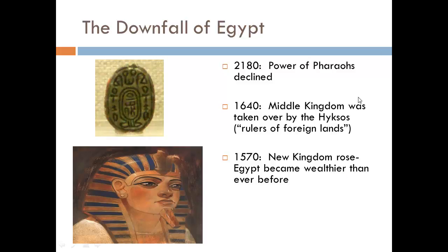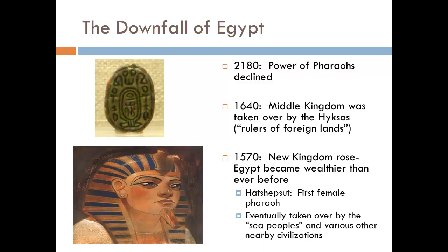The New Kingdom was actually the wealthiest kingdom in Egypt's history. It featured, for example, the first female pharaoh: Hatshepsut. She is dressed in a very similar fashion to other pharaohs, with a beard protector, though she's clearly feminine — following the same male expectations of what it meant to be a pharaoh. Eventually the New Kingdom was taken over by the Sea Peoples and various other nearby civilizations, and ancient Egypt — that very powerful empire — eventually crumbled.